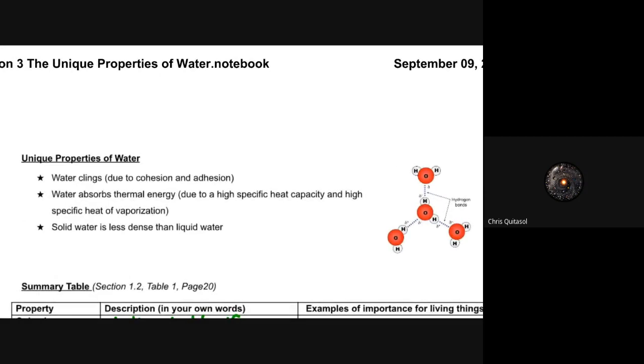So the last thing I want to look at with regards to the unique properties of water before I end this lesson is the idea that there are three of them. And I can't stress this enough how important this is. It's very important that you understand and know the unique properties of water. So water clings as a result of cohesion and adhesion. It can absorb huge amounts of thermal energy due to that high specific heat capacity and high specific heat of vaporization. And solid water is less dense than liquid water. It can also form those hydrogen bonds as a result of polar or nonpolar substances being dissolved in it. And as a result of that, it can take on the properties of that dissolved substance.